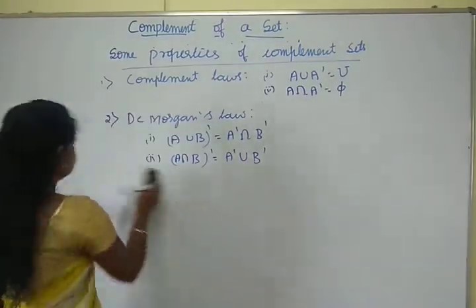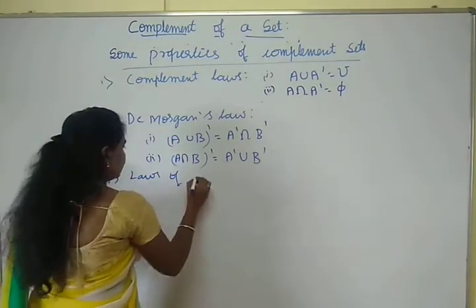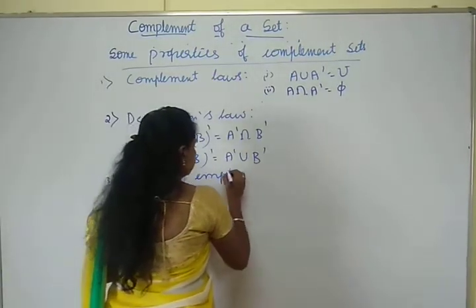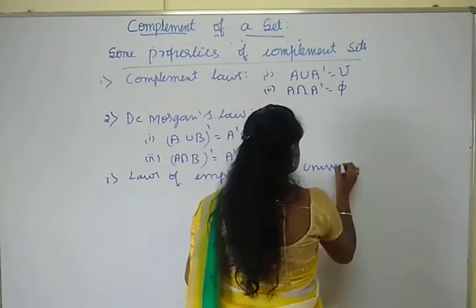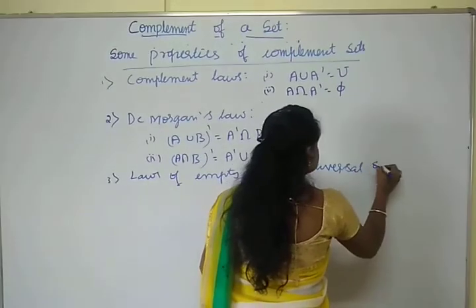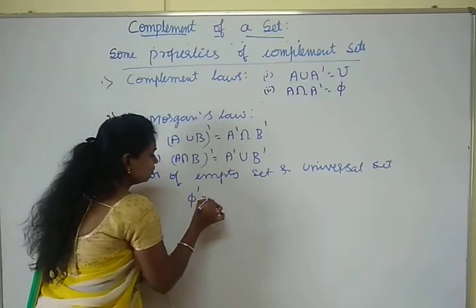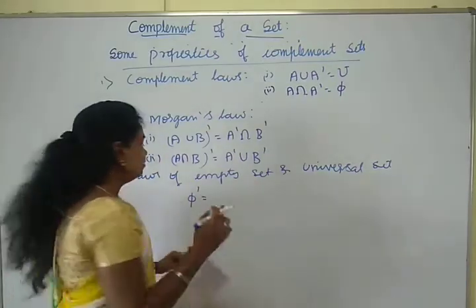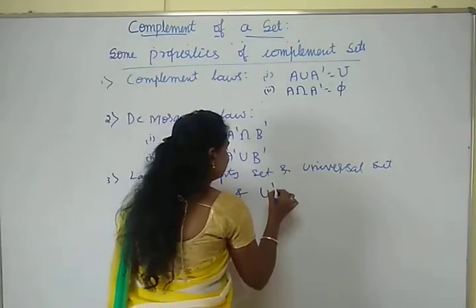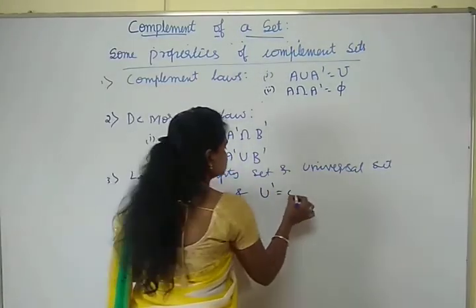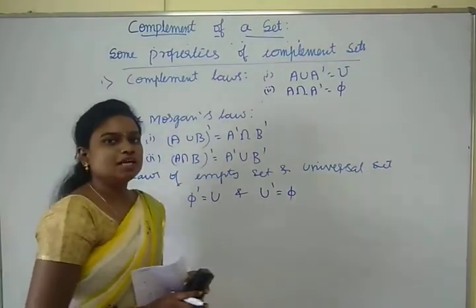The third property is the law of empty set and universal set. The complement of the empty set is the universal set, and the complement of the universal set U is the empty set. These are all the properties of complement of a set.